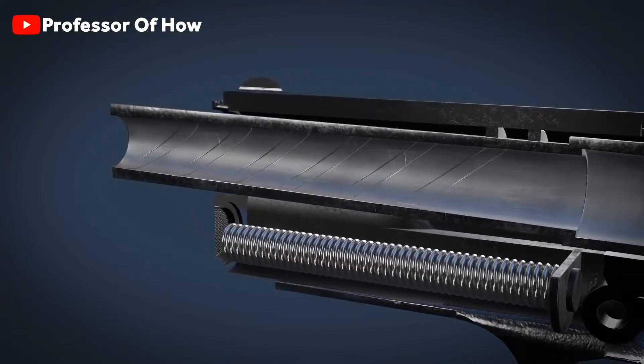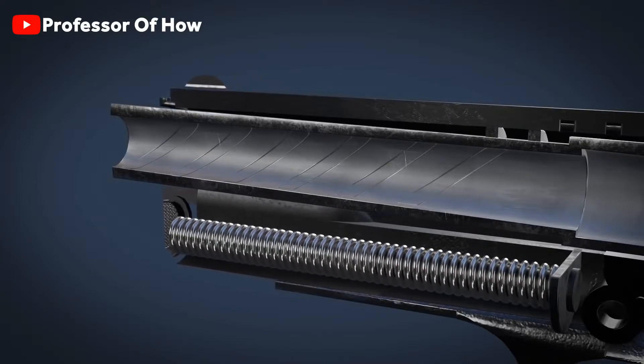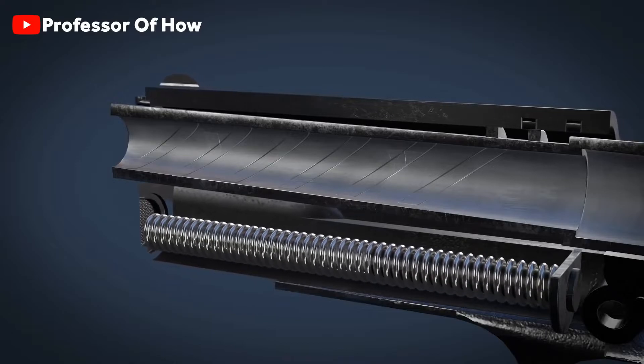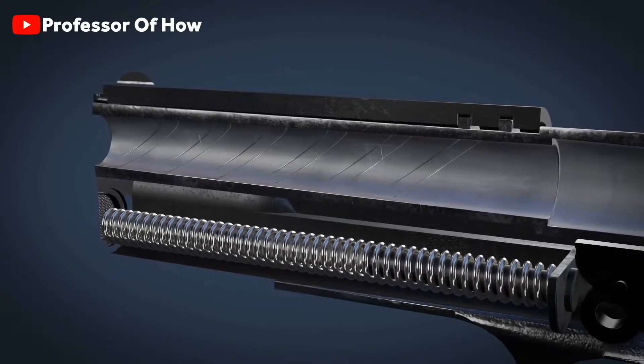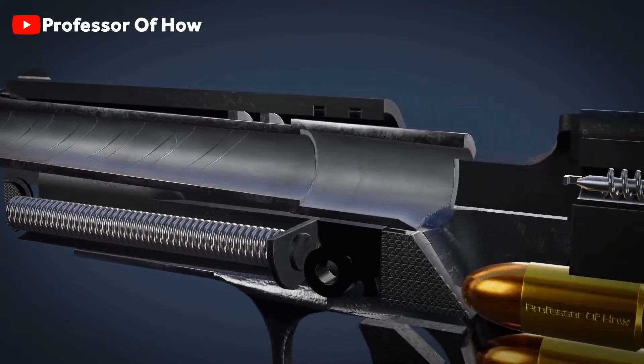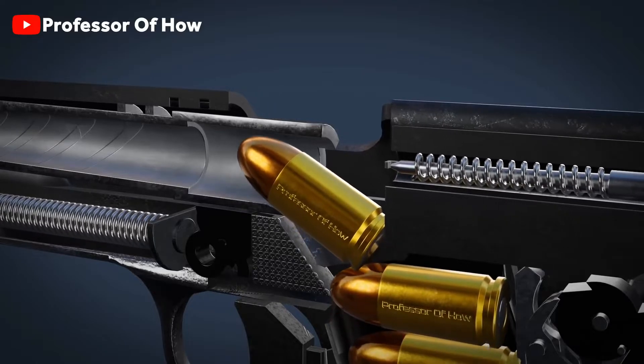Now, as soon as your hands are off the slide, the recoil spring in tension will retain its initial state. And also, spring will bring back the slide to its initial position. A point to note here is that the slide will push the cartridge into the barrel when getting back to its initial position.